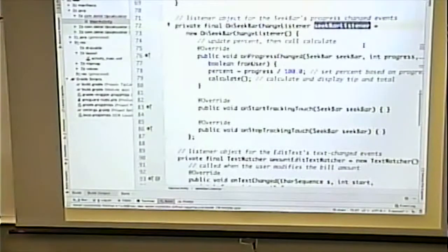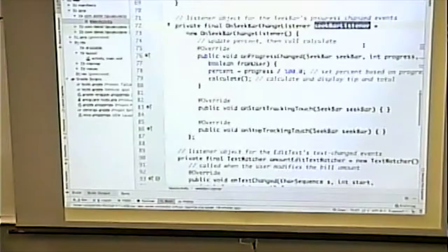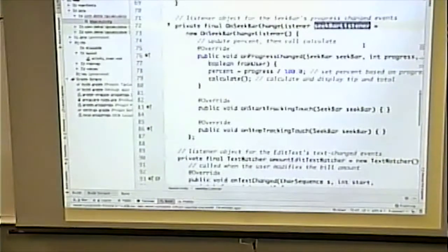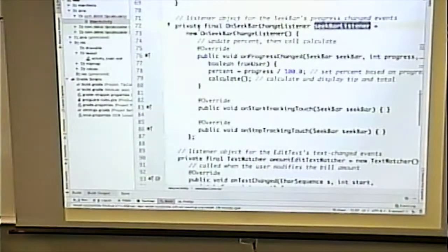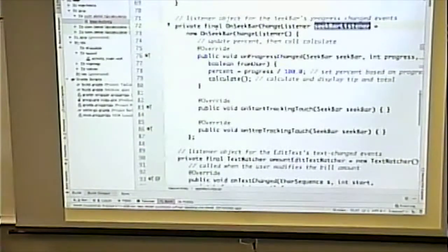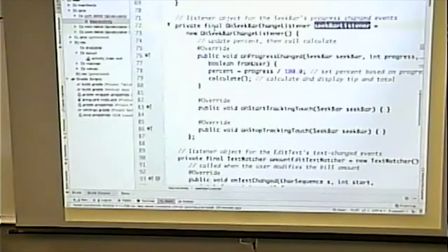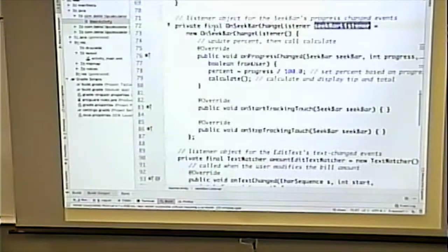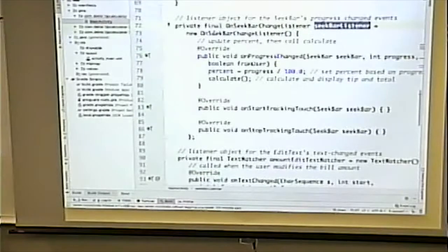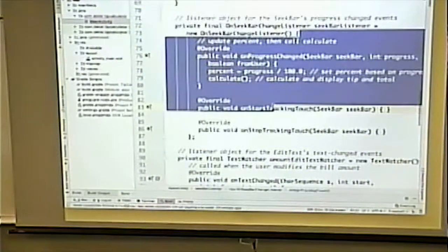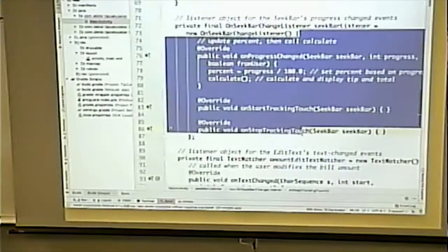This class. There is no class name here other than on seek listener. And that's actually an interface. Normally if we were going to do this in a separate class would say something like public class my spinner or my seek bar listener implements on seek bar listener. And then would define the class. Here we define the class sort of just like right smack dab in the middle of our code. Not in a separate file.